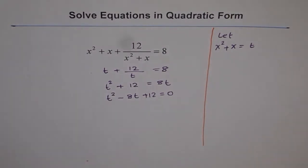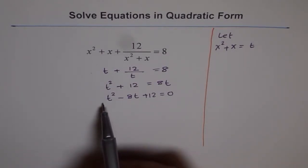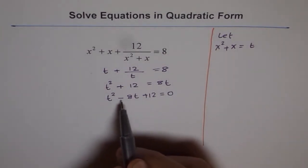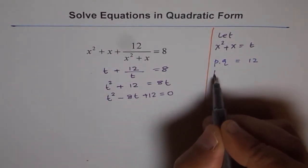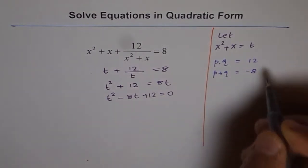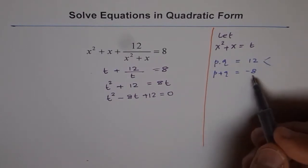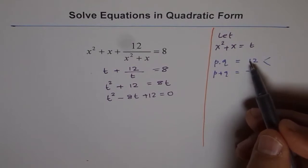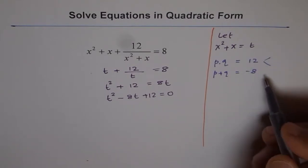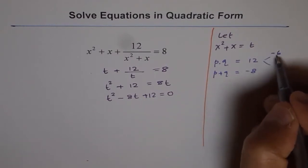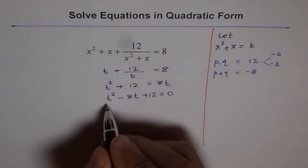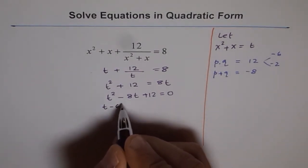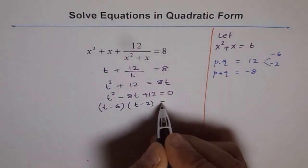That's a familiar quadratic equation we can solve by factoring. The coefficient of t squared is 1, so we need two numbers whose product is 12 and sum is minus 8. Both numbers must be negative to give a positive product and a negative sum. Minus 6 and minus 2 work: their product is 12 and their sum is minus 8. So the equation factors as t minus 6 times t minus 2 equals 0.